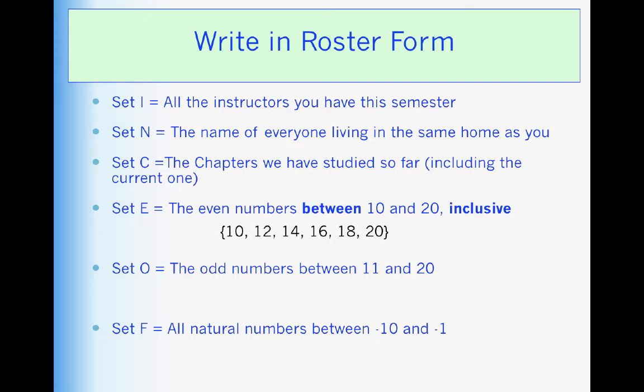Let's look at set E. Did you write 10, 12, 14, 16, 18, 20? If you did, you're correct. We want the even numbers between 10 and 20 inclusive. That means with the endpoints. The odd numbers between 11 and 20? Because I didn't have the word inclusive in there, we do not include the endpoints. So 11 is not in there. And finally, all natural numbers between negative 10 and negative 1? Well, there aren't any because the natural numbers start at 1. They're the counting numbers.